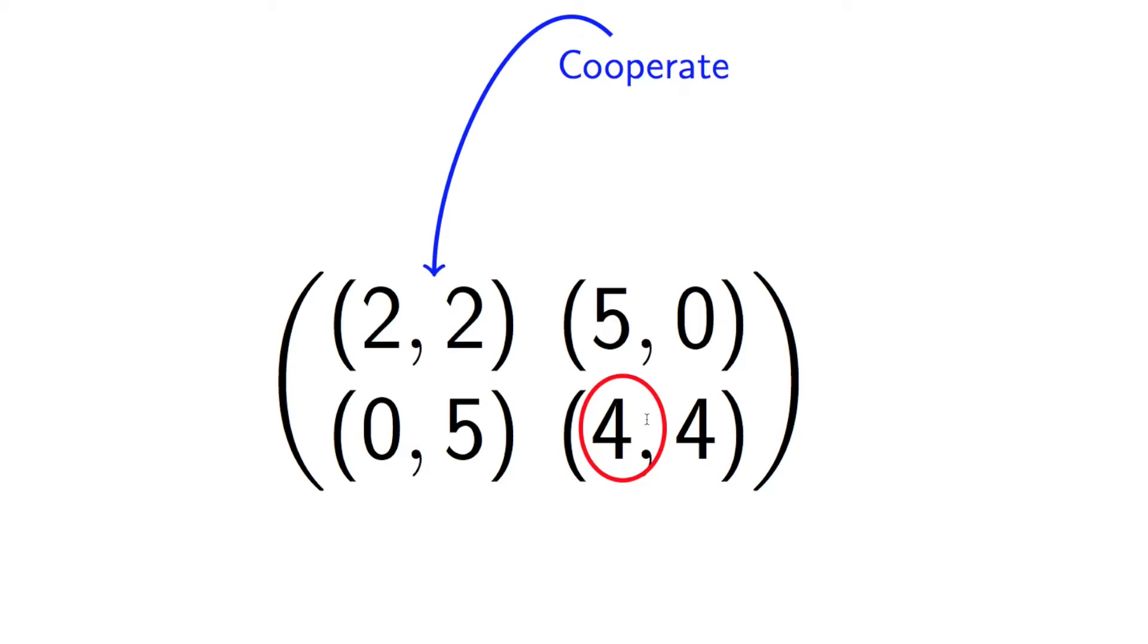Similarly, if player two is cooperating, now player one is comparing two and zero, and so player one should also defect. So we'll remember that.